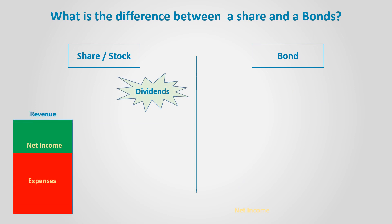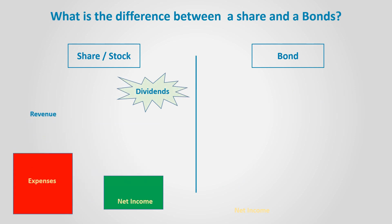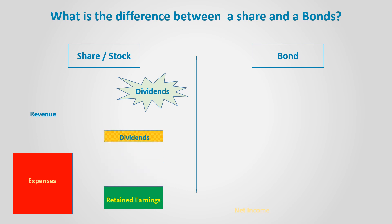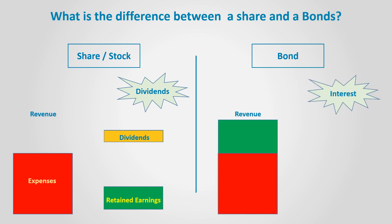A shareholder receives dividends. Dividends are distributed from retained income, which is the undistributed net income resulting from subtracting expenses from revenues. A bond holder receives interest, which is part of expenses that are deducted from revenues to get net income. Expenses are tax deductible, while dividends are not.